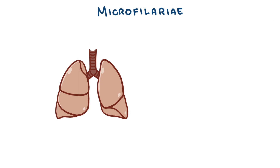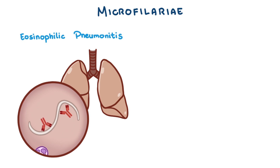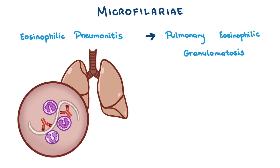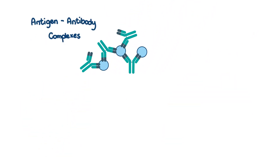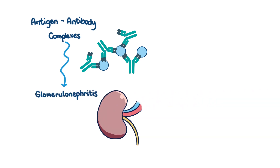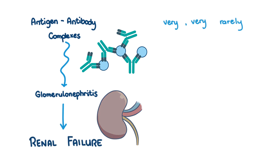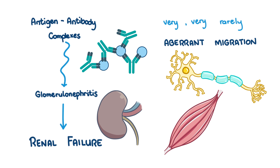What about the microfilariae? Their presence in the pulmonary vasculature may result in eosinophilic pneumonitis, which happens when antibodies attach to the microfilariae and attract inflammatory cells — mostly eosinophils and some neutrophils. A rarer form is pulmonary eosinophilic granulomatosis, where eosinophils and neutrophils form a granuloma around the microfilariae. Antigen-antibody complexes from heartworm antigens can cause glomerulonephritis, resulting in a sequelae that can end in renal failure. Very rarely, heartworms can migrate away from their intended location and end up in nervous, muscular, or ocular tissues.